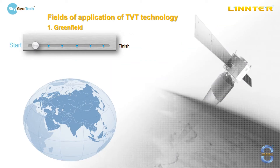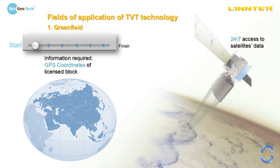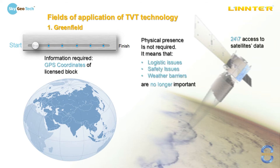Now we are going to tell you about TVT direct applications. The first field of TVT application is green field — when nothing was done and no surveys or explorations were made. TVT technology can stand by itself and all we need to start our work is just GPS coordinates of the license block. We have 24/7 access to satellite data and we start working immediately. There is no need for physical presence, which means that logistic issues, safety issues and weather barriers are no longer important.